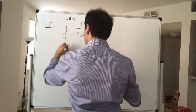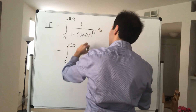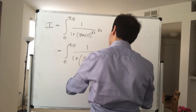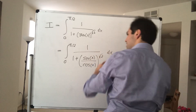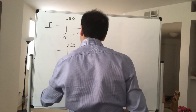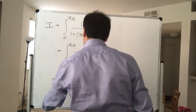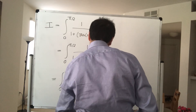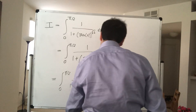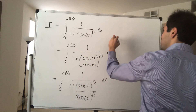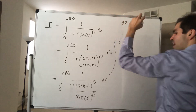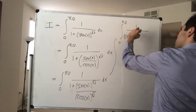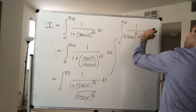First of all, notice that you can write tangent as sine over cosine. So it's 1 over 1 plus sine of x over cosine of x, all to the square root of 2, dx. Which becomes the integral from 0 to π/2 of 1 over 1 plus sine of x to the square root of 2, over cosine of x to the square root of 2, dx.